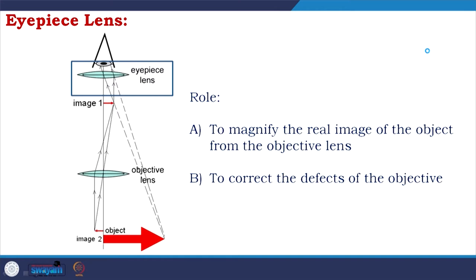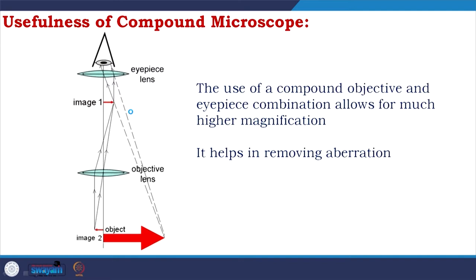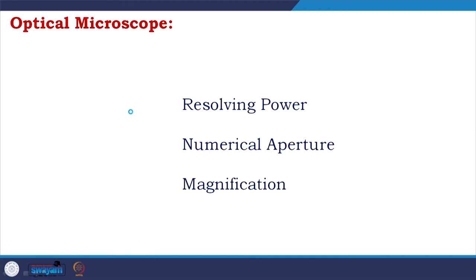The role of eyepiece lenses is to magnify the real image from the objective lens and to correct the defects of the objective. The use of a compound objective and eyepiece combination allows for much higher magnification and also helps in removing aberrations. In an optical microscope, functionality depends on resolving power, numerical aperture, and magnification.